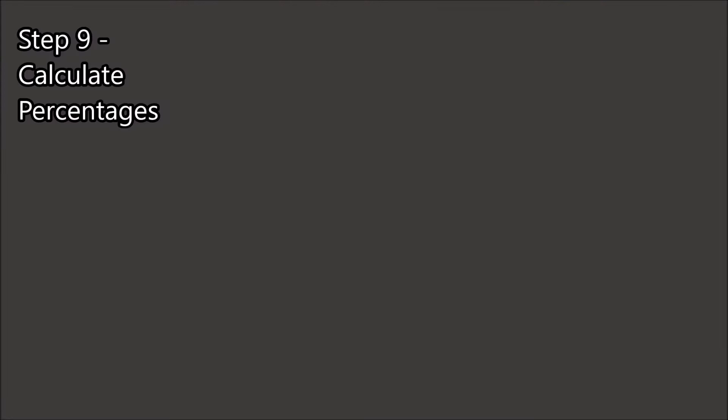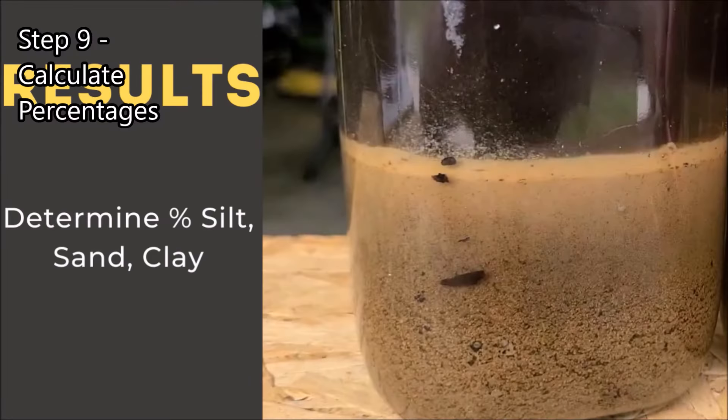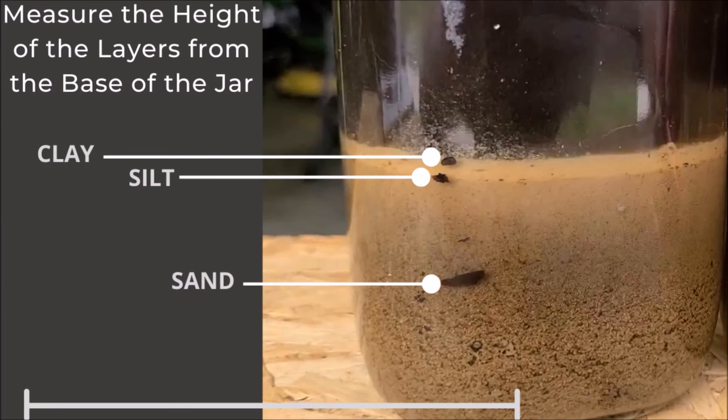Now we're going to calculate our results. To do this, we're going to measure the height from the bottom of the jar to each of our marks. I had 43 millimeters of sand, 63 millimeters silt, 68 millimeters clay—so the clay is the total height of everything.